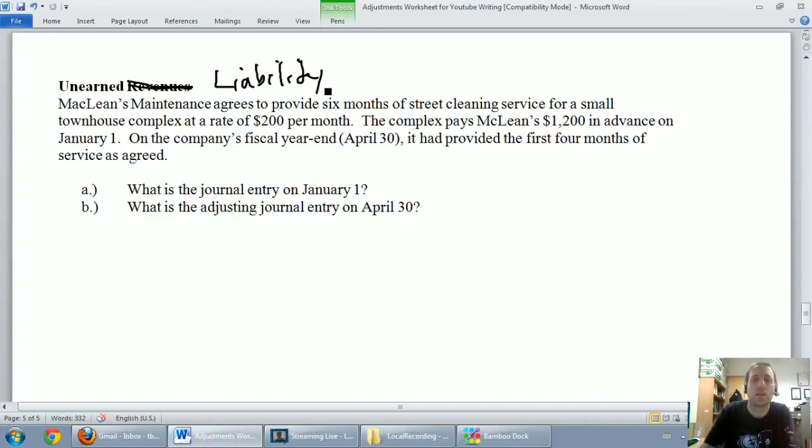Okay, so on January 1st, it says the complex pays McLean's $1,200 on January 1st. So we're McLean's, on January 1st we're getting paid, so anytime you're getting paid you're getting cash, cash is an asset, it's an asset going up, we're going to debit cash. So let's debit our cash. I forgot to date this, January 1st. We're going to debit cash and they paid us $1,200, they paid us six months in advance. So we're going to debit cash for $1,200 and that of course goes under the debits.